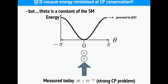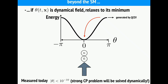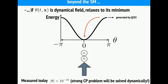The vacuum energy of QCD as a function of theta is periodic. The standard model could have picked any value of theta, but nature chose a very small value. The nice realization of Peccei and Quinn is that if we build an extension of the standard model in which theta is not a constant but a field that can change in time, then no matter the initial value, it will tend to go to zero — it will lose energy and go to the minimum energy state, dynamically solving the strong CP problem.